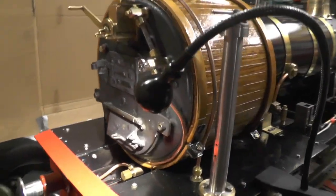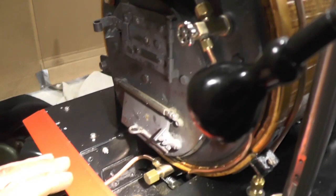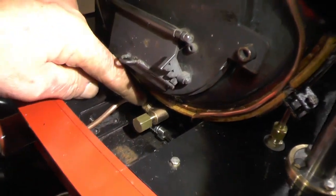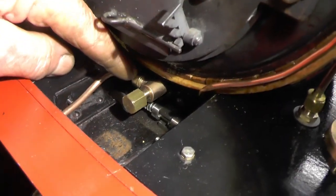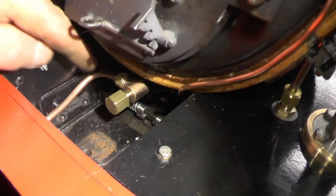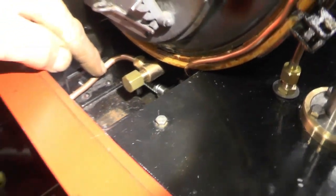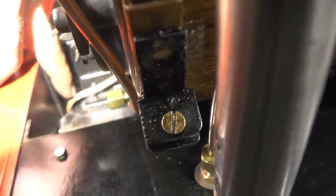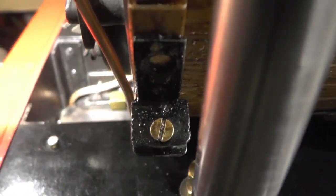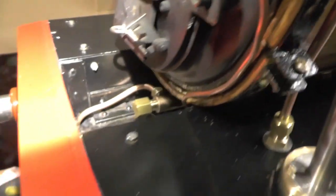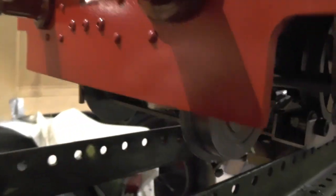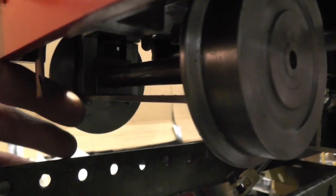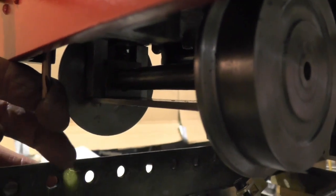Little bit fiddly, that bit of a tight space in there, but managed to get the union nut on. Here's the pipe, and I've just managed to get through this hole in the corner of the stretcher. And then it just comes out here behind the buffer beam.